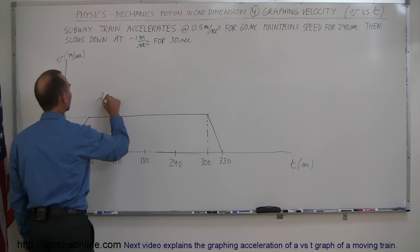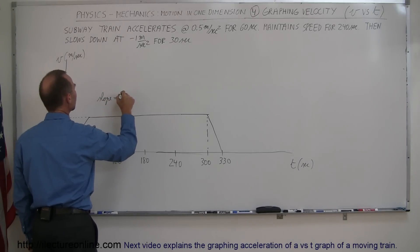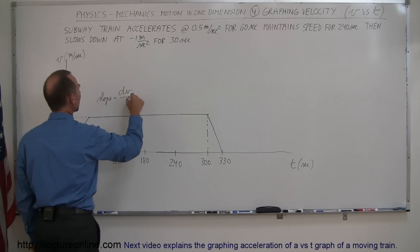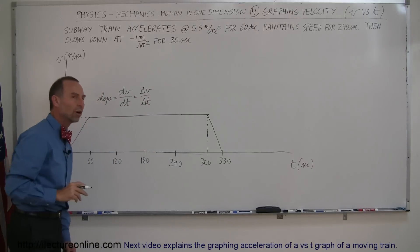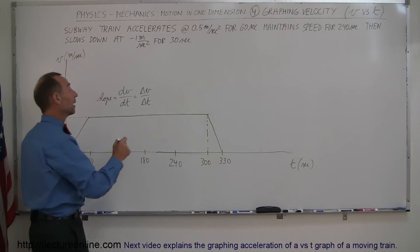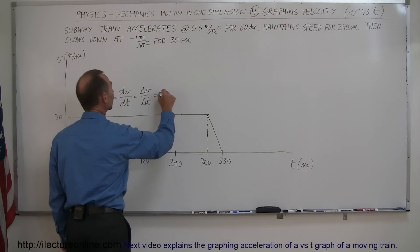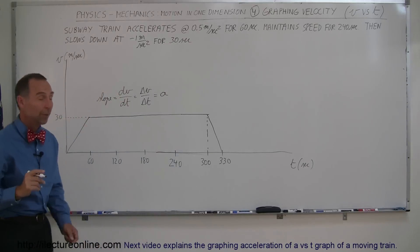The slope is the rate of change, the dv/dt, or I can also write delta v divided by delta t, the rate of change of the velocity versus time, which by definition is the acceleration. So the slope of this graph represents acceleration.